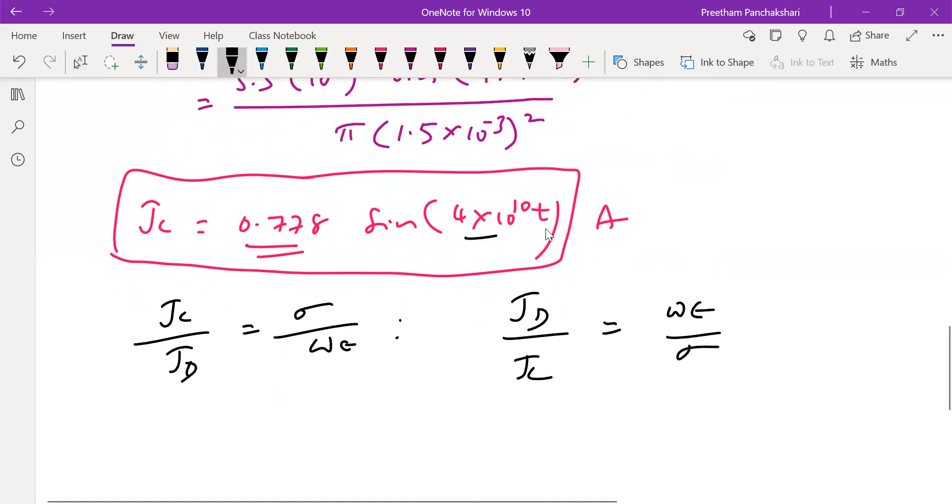Jd, look at this one. This is ωt in standard form, so the Jd by Jc can be taken as omega, means 4×10^10.